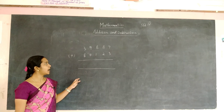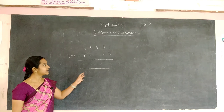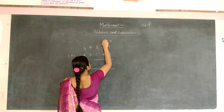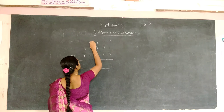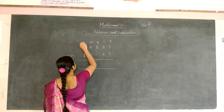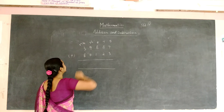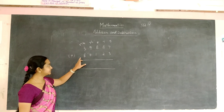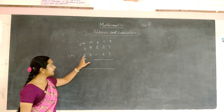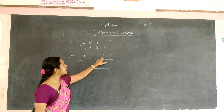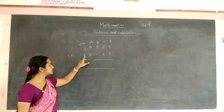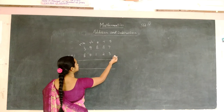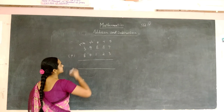To add two numbers you have to place the numbers with the place value, that is 1, 10, 100, 1000, and 10,000. The numbers to be added should be written one below the other. You have to write the numbers according to the place values and start adding from 1's, then move to 10's, 100, 1000, and 10,000.